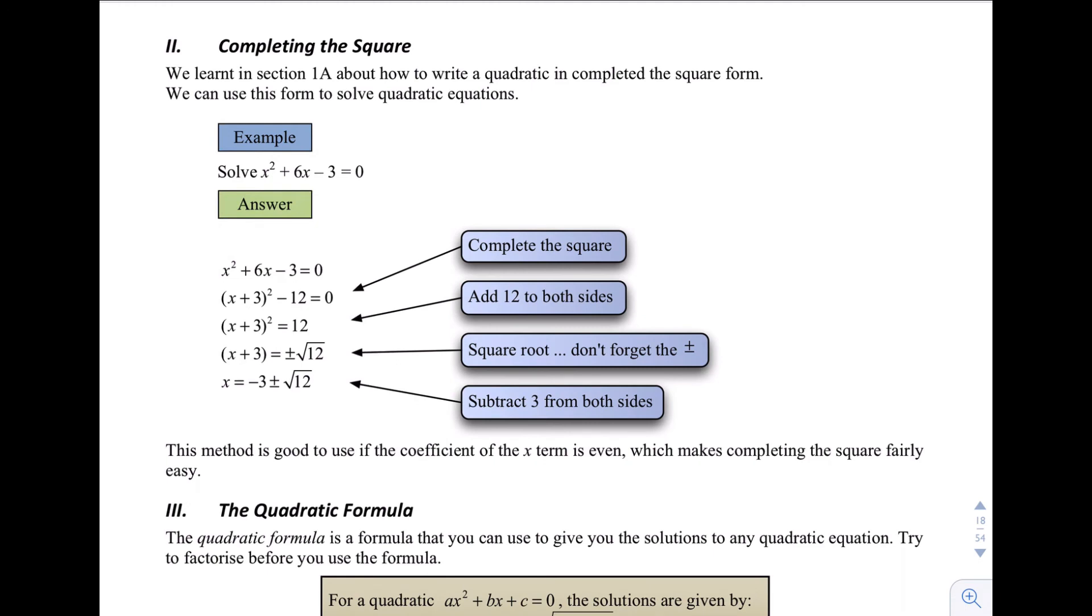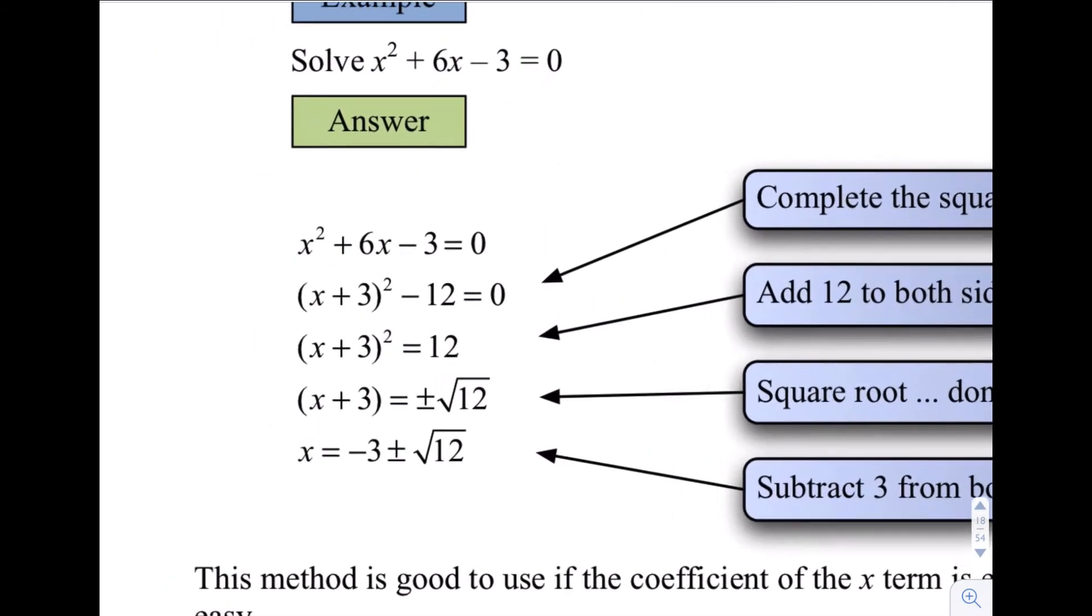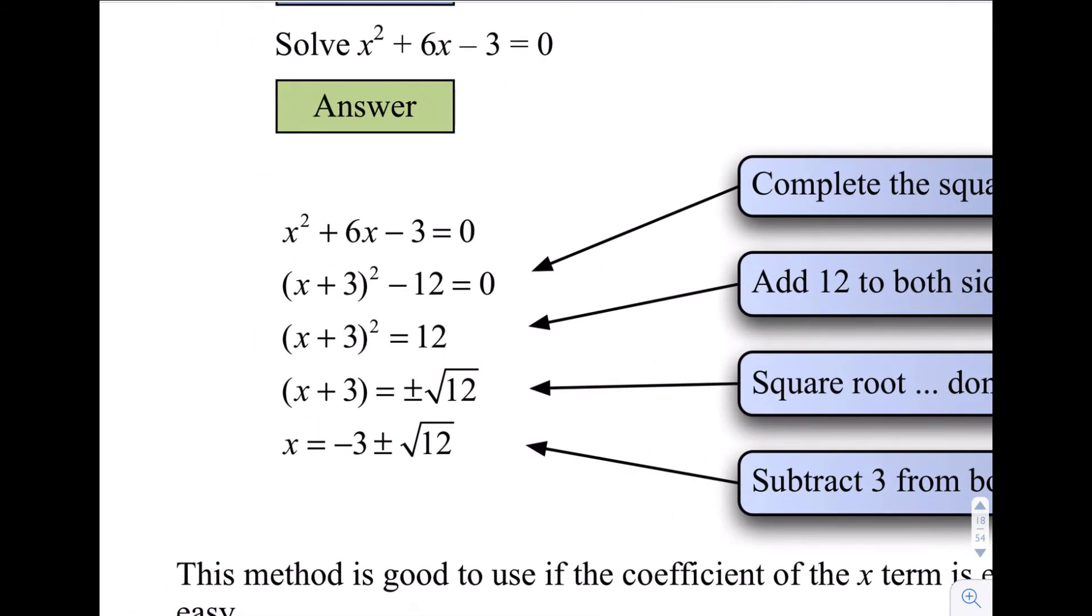Okay, second method for solving quadratics is called completing the square. Now we did this before, back in video one, the first thing here was about completing the square. So this one here is just how you would use that technique to actually solve the equation. So we've got x squared plus 6x minus 3. So if you recall back in that video here, when we are completing the square, this number here is half of this number here. So we get x plus 3 all squared. I can do that in my head. That's x squared plus 6x plus 9. But we wanted minus 3. To go from 9 to minus 3, I have to subtract 12. So this whole thing here now, we have completed the square. x plus 3 squared minus 12.